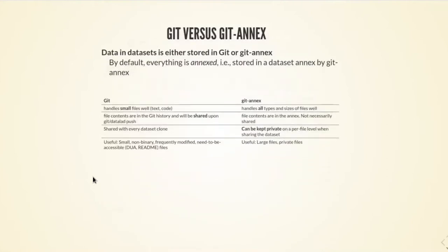The reason for this behavior — file content that is only available on demand and comes as metadata file names when you clone a dataset — is that this file content is stored in Git Annex instead of Git. Your dataset has contents stored in either Git or Git Annex. If you create a dataset without any configuration, then everything will be annexed by default. Git Annex is a tool that can handle every single type of file well — it doesn't matter what type, binary or text, what size, or what privacy concerns are.